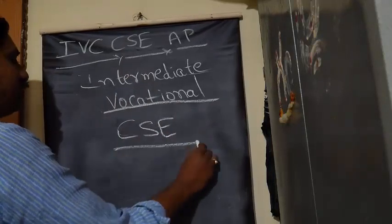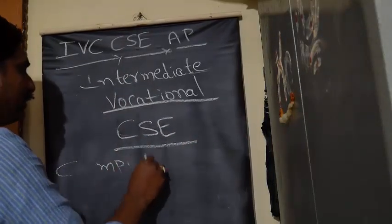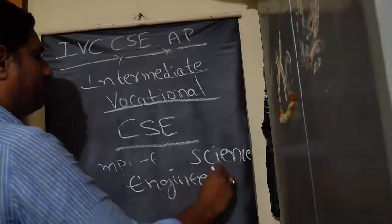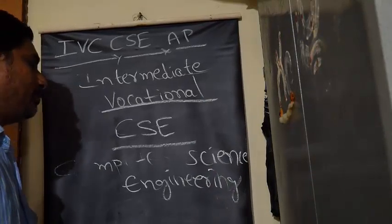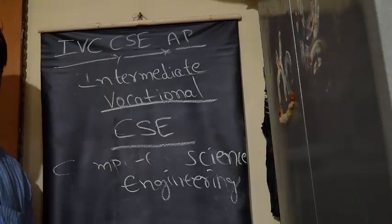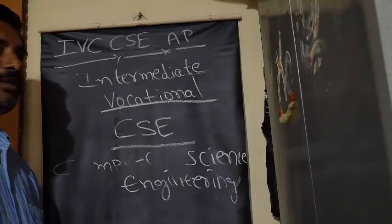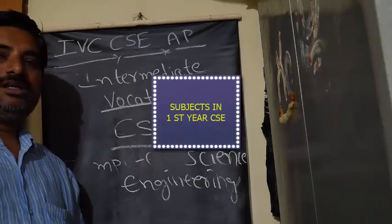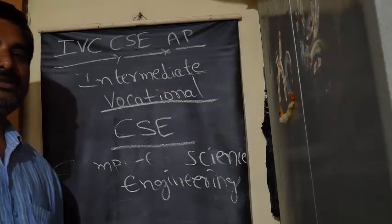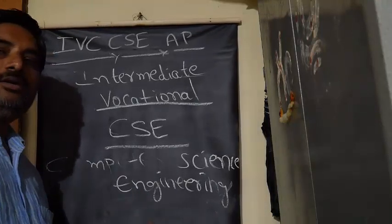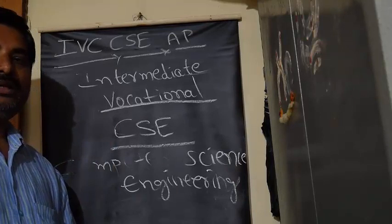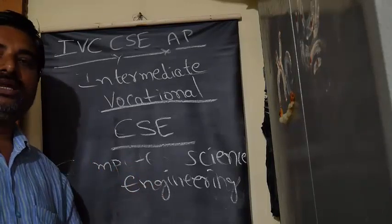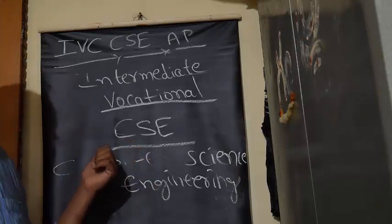CSE means computer science engineering. It is an engineering course where we learn about computer science. All subjects are related to computer science only. In first year subjects, we have MS Office, C Programming Language, and Accounts and Tally as the core computer subjects. Additionally, we have GFC and Spoken English — not normal English, but spoken English. So in first year CSE, we have three computer subjects plus two general subjects. Many engineering courses are available in vocational at intermediate level, such as CSE, EET, or MET.